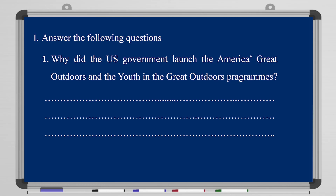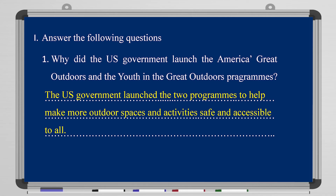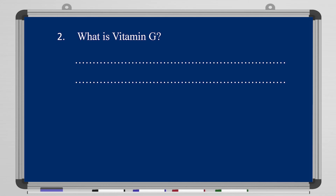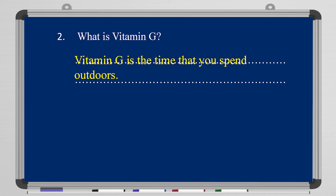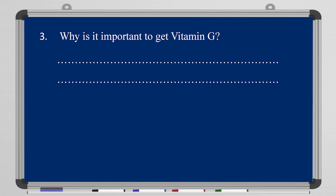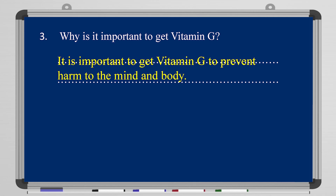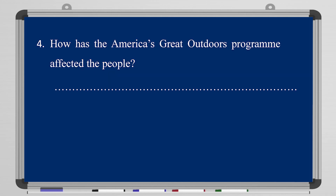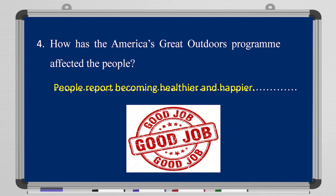Now let's look at the productive questions. Why did the United States government launch the America's Great Outdoors and Youth in the Great Outdoors programs? The answer: to help make more outdoor spaces and activities safe and accessible to all. What is vitamin G? It is the time you spend outdoors. Why is it important to get vitamin G? It is important to prevent harm to the mind and the body. How has the America's Great Outdoors program affected people? People report becoming healthier and happier.